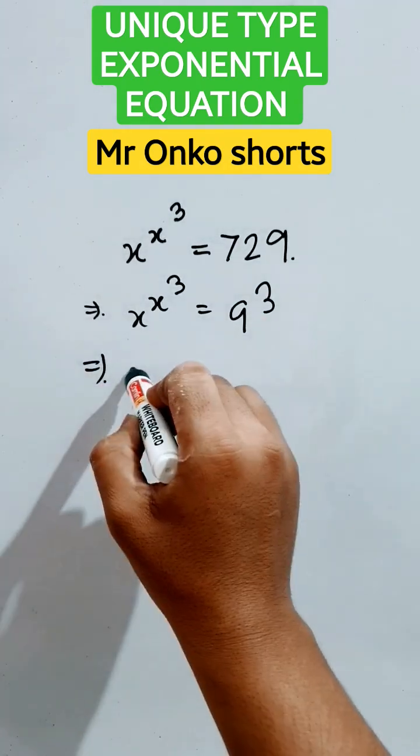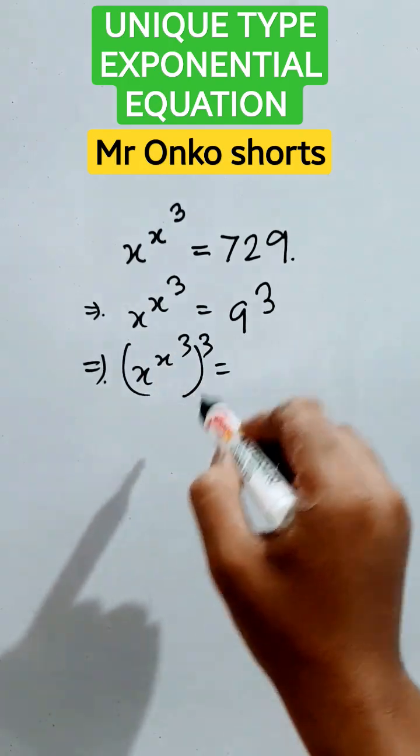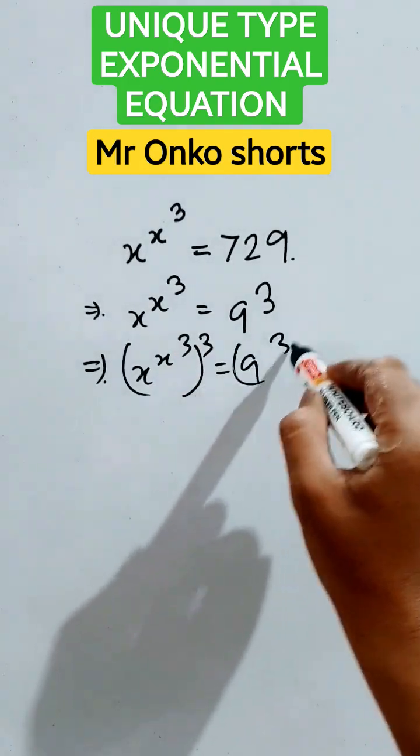So, here we will use a trick. We will take the cube raised to the power 3 in both sides. That will be this.